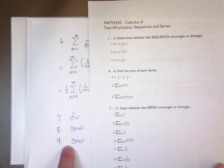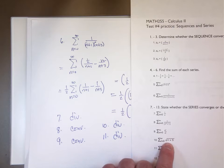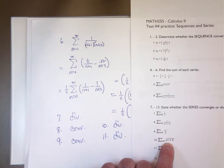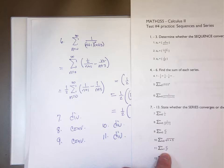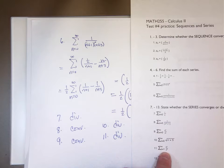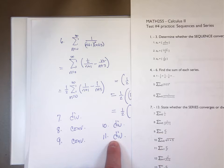Number 9 converges. Number 10, however, diverges because that term does not go to 0 as n goes to infinity — it goes to infinity. If the terms are going to infinity, the series will diverge. Number 11: 5 to the n is exponential form, n to the 5th is polynomial. Exponential forms increase faster than polynomials. Therefore, these terms are not going to go to 0; they will go to infinity, causing the series to diverge.